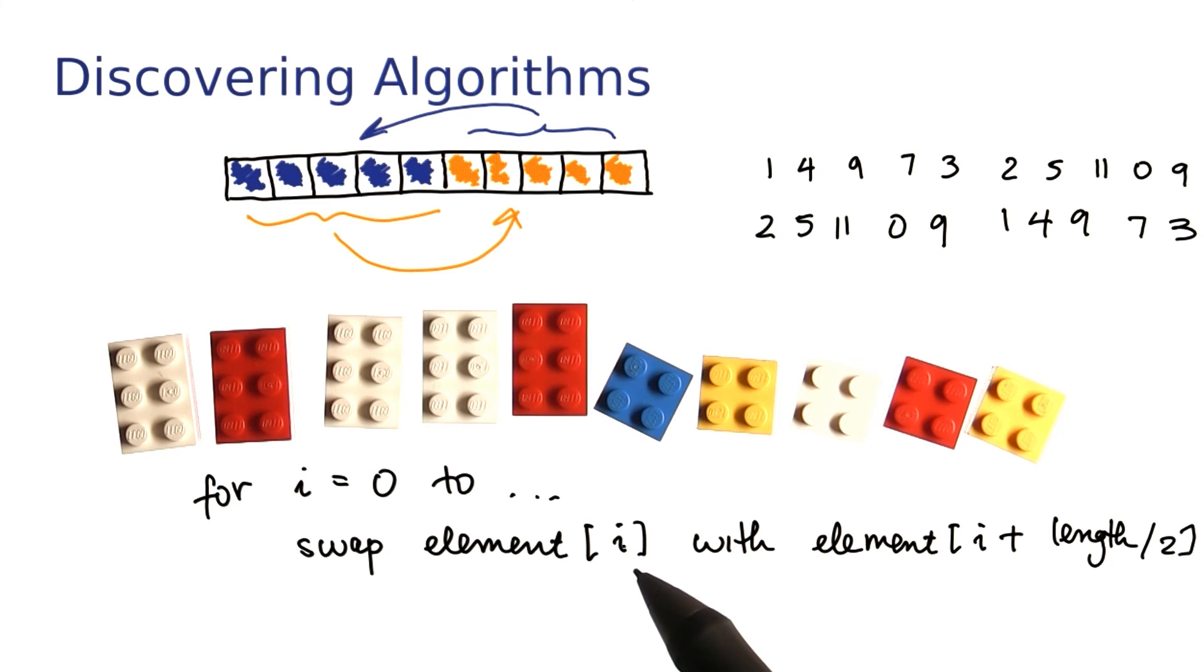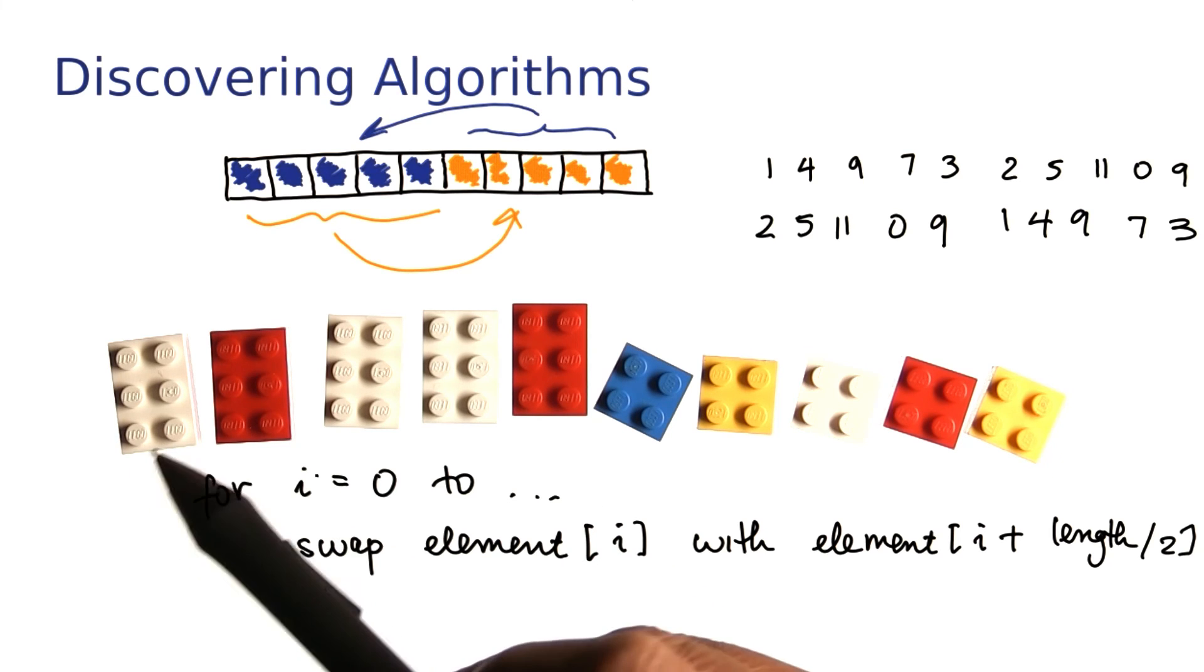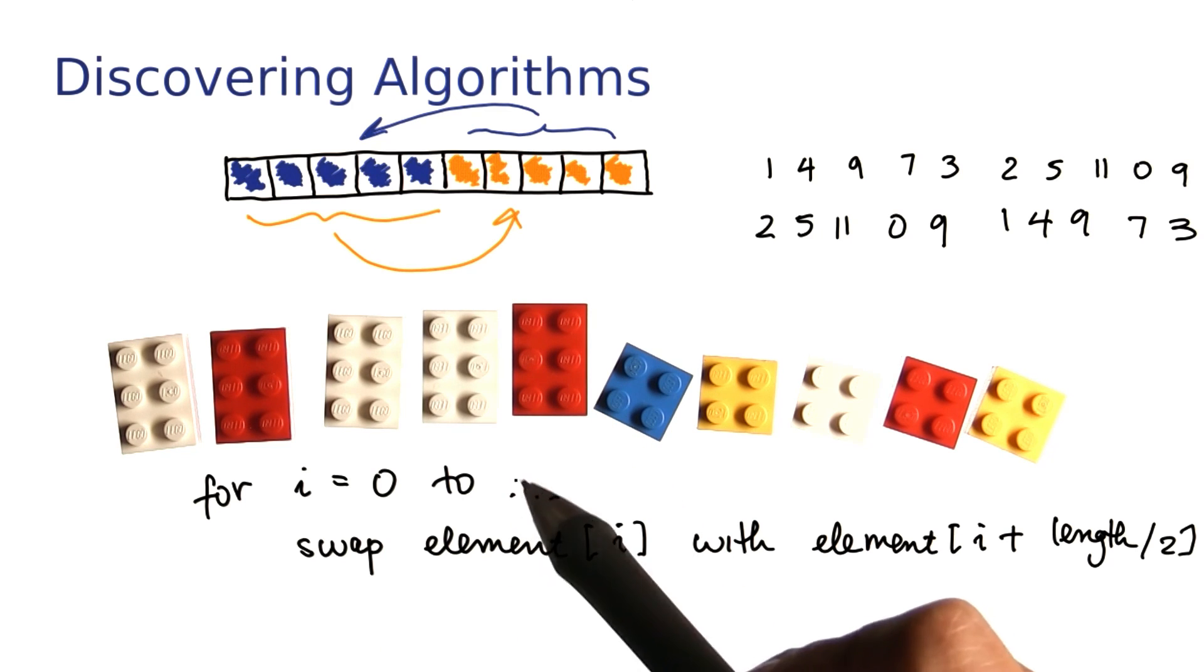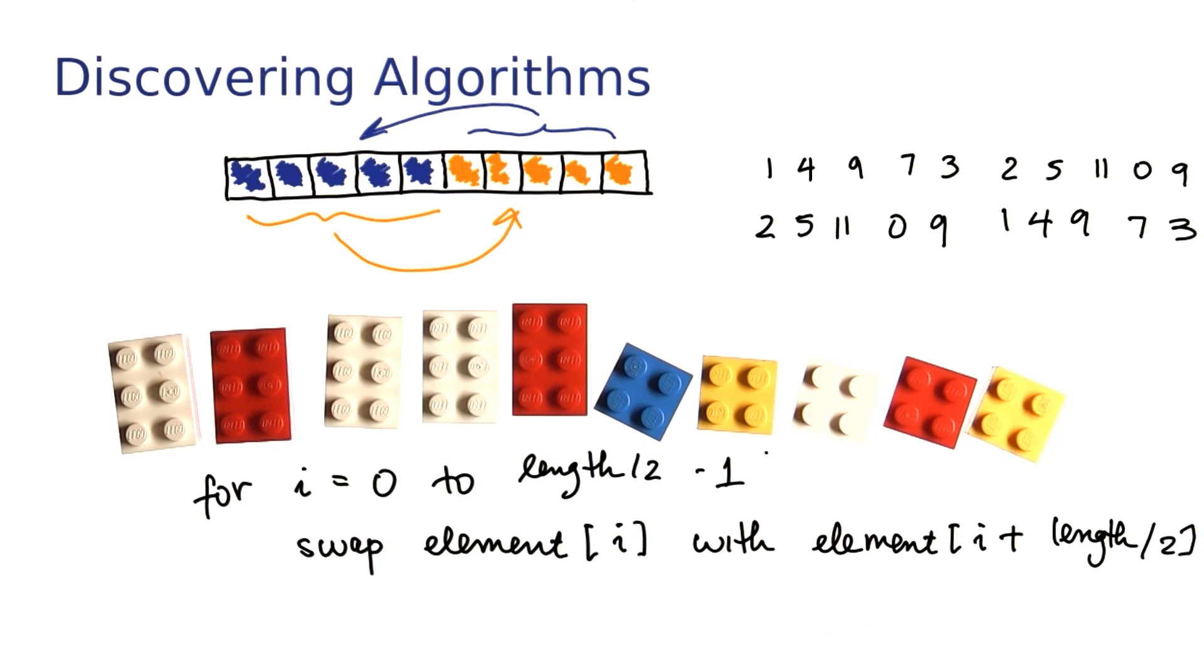Now, how far does i go? In this case, it went from 0 to 4. So, in general, it'll go to length over 2 minus 1.